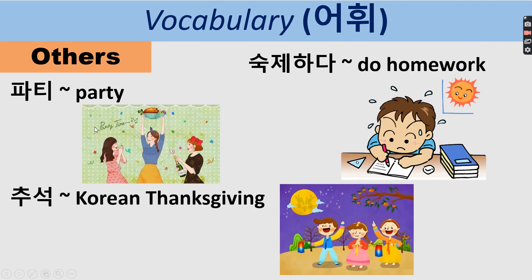More vocabulary: 파티 means party — easy because it's an English word Koreanized. 추석 is Korean Thanksgiving, which is a huge holiday in Korea. And 숙제하다 means to do homework. For 2021, Chuseok was celebrated from September 20 to September 22 — always a three-day holiday. Let's pronounce: 파티, 추석, 숙제하다.